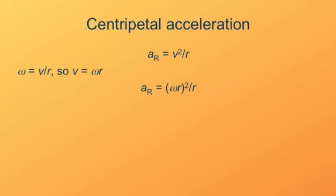Omega r squared simplifies to the square of the angular speed times the radius. This makes sense — the faster you spin, the more the acceleration. It also makes sense that as you move farther and farther away from the center, at the same rate of spinning, the acceleration goes up.